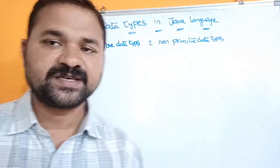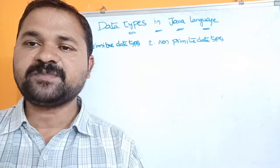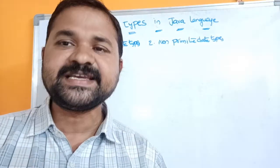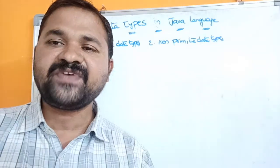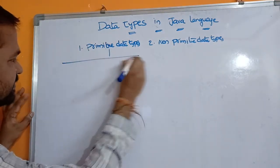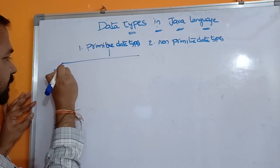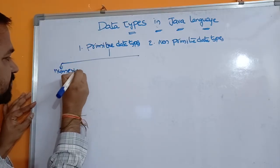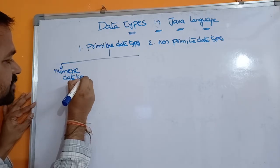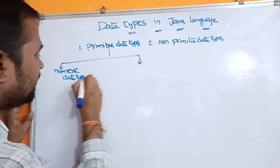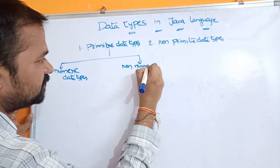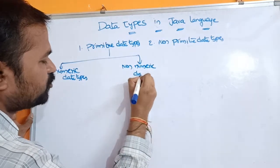We can classify data types into two types: the first one is primitive data types, and the second one is non-primitive data types. Primitive data types are nothing but built-in or basic data types. We can classify primitive data types into two types: the first one is numeric data types, and the second one is non-numeric data types.